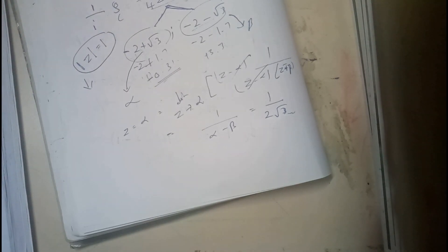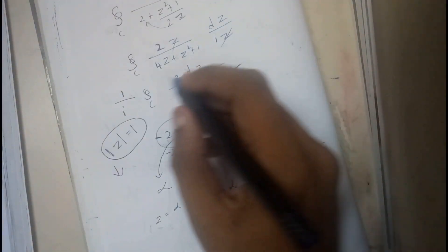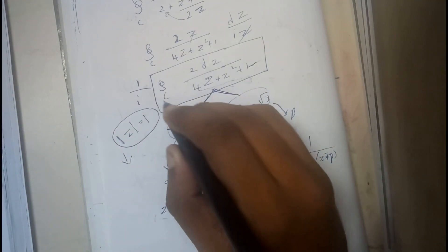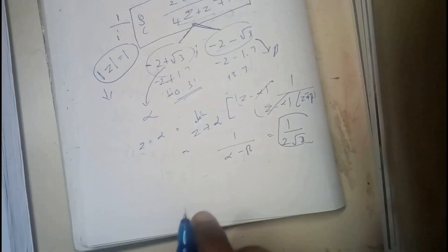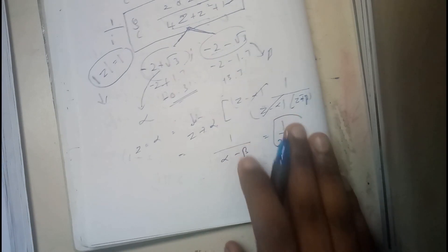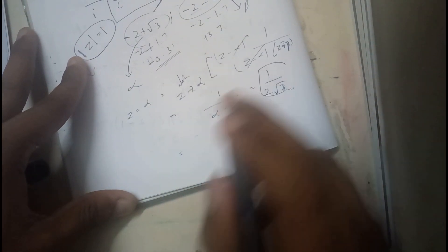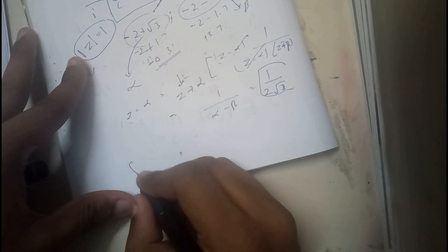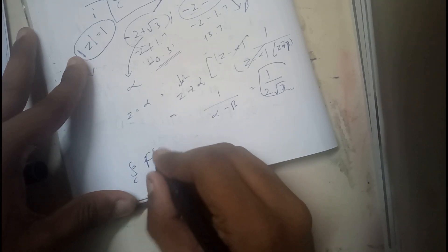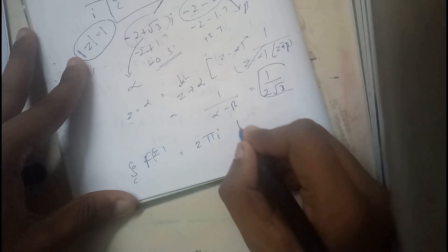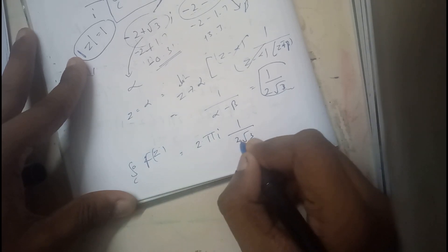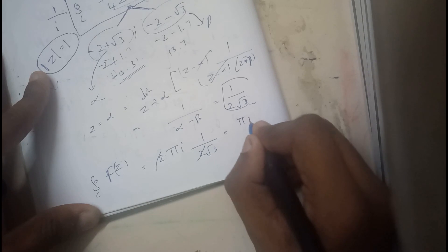So now this is the answer for only this part. Even this is not the exact answer. We need to multiply it with 2πi. I just forgot that. So that will be our residue. So if you apply the closed circle integral of f(z), it is nothing but 2πi into 1/(2√3). So 2 and 2 will be canceling, so πi/√3.